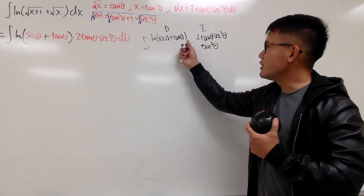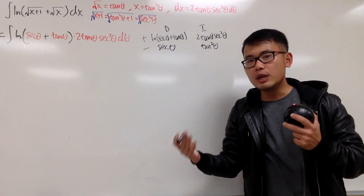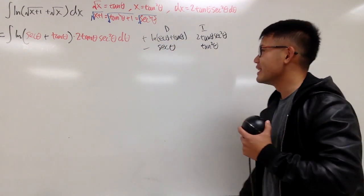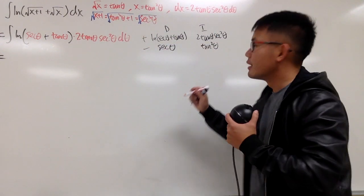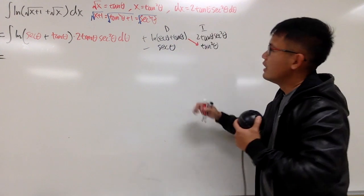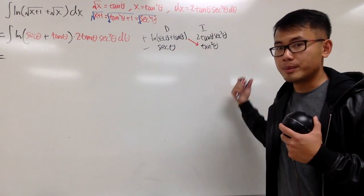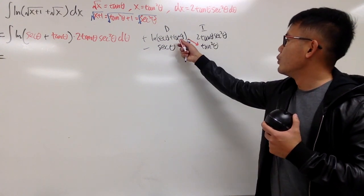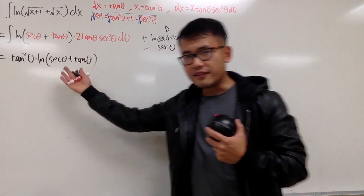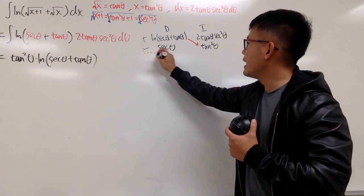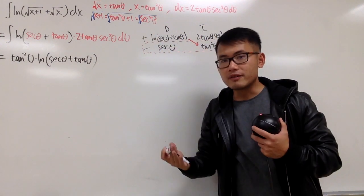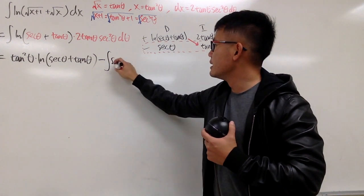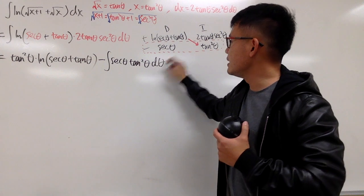When you differentiate ln of secant theta plus tangent theta you get secant theta, and the integral of secant theta gives that standard result. The product of the diagonal gives the first part of the answer. We stop here because the remaining integral is manageable. So our expression becomes: ln of secant theta plus tangent theta times tangent squared theta, minus the integral of secant theta times tangent squared theta d theta.